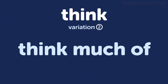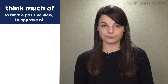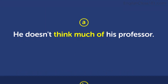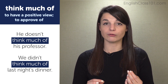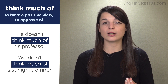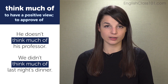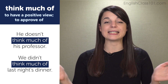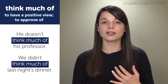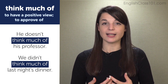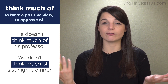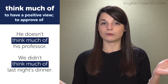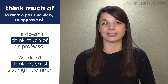The next variation is think much of, which means to have a positive view of or to approve of. Examples: He doesn't think much of his professor. We didn't think much of last night's dinner. The first sentence means he didn't really approve of his professor or didn't have a very positive view of him. The second sentence means we didn't really approve of last night's dinner or we don't have a very positive opinion of it. These meanings are rather long to explain, so we condense them using think much of.